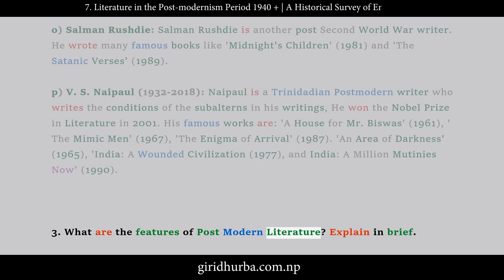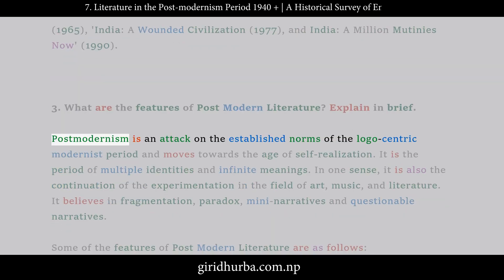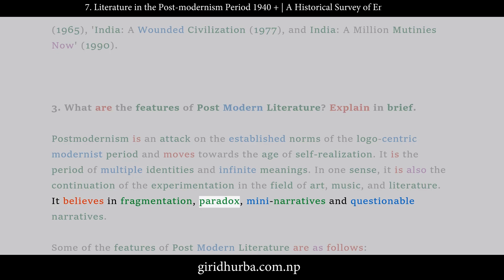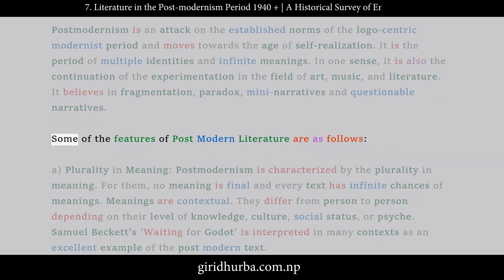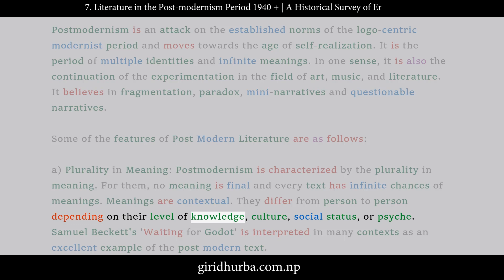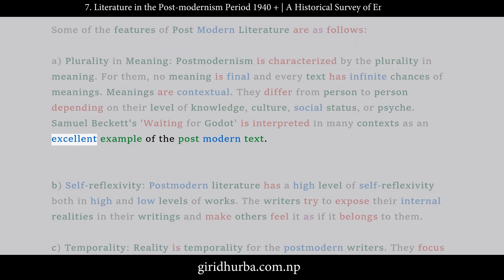Question 3: What are the features of postmodern literature? Explain in brief. Postmodernism is an attack on the established norms of the logocentric modernist period and moves towards the age of self-realization. It is the period of multiple identities and infinite meanings. Some features: A. Plurality in Meaning — Postmodernism is characterized by the plurality in meaning. No meaning is final and every text has infinite chances of meanings. Meanings are contextual and differ from person to person depending on their level of knowledge, culture, social status, or psyche. Samuel Beckett's Waiting for Godot is interpreted in many contexts as an excellent example of the postmodern text.